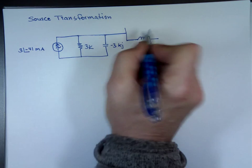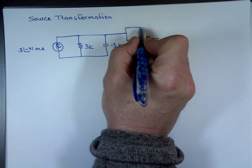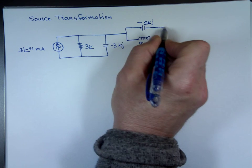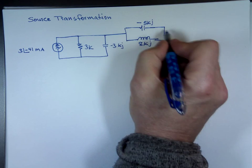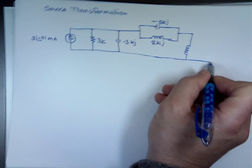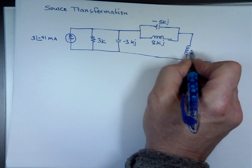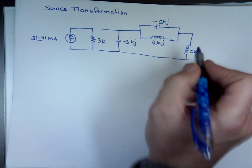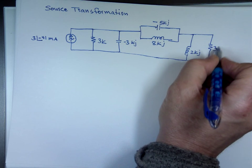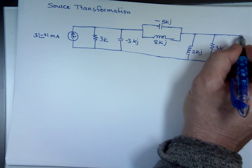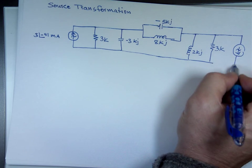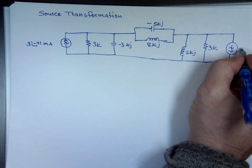There's a j there, capacitor negative 5kj, another inductor here 2kj. Let's put a resistor here 3k. Is this good enough? I have some space, let's put another source here.